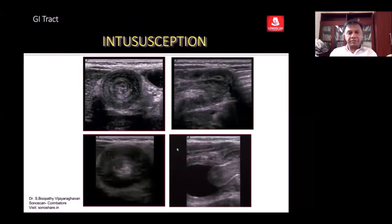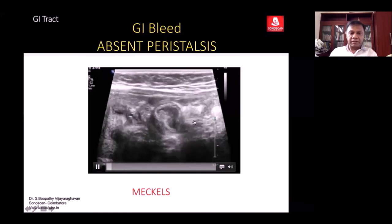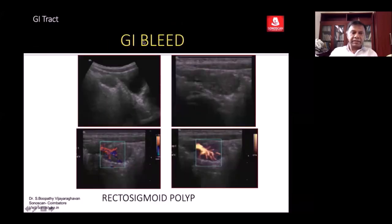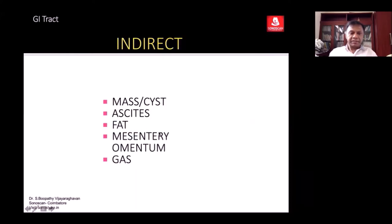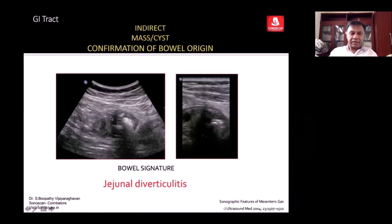Intussusception — typically referred because of clinical presentation with diarrhea and pain abdomen — shows absent peristalsis as the clue, while the rest of the bowel loops are normal. With this clinical history you suspect a polyp and use high frequency — you see the polyp outlined by gas. Mesenteric abnormalities are discussed in a separate lecture. A jejunal loop adjacent to a cyst showing the bowel signature in the wall of the cyst, along with a tubular lesion adjacent to the jejunum with thick walls and gas.